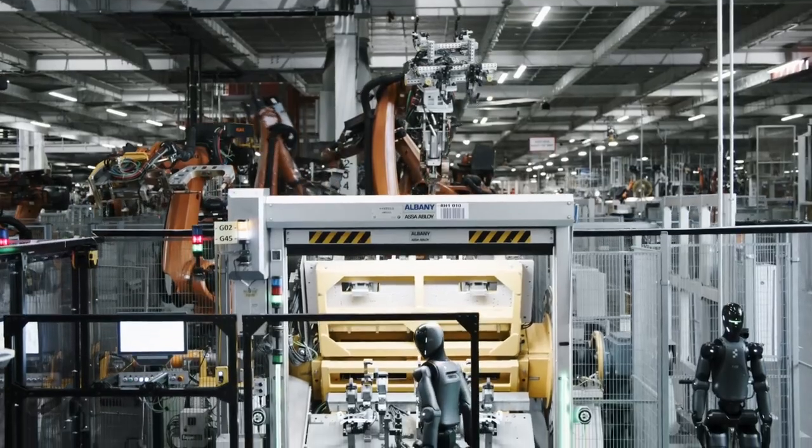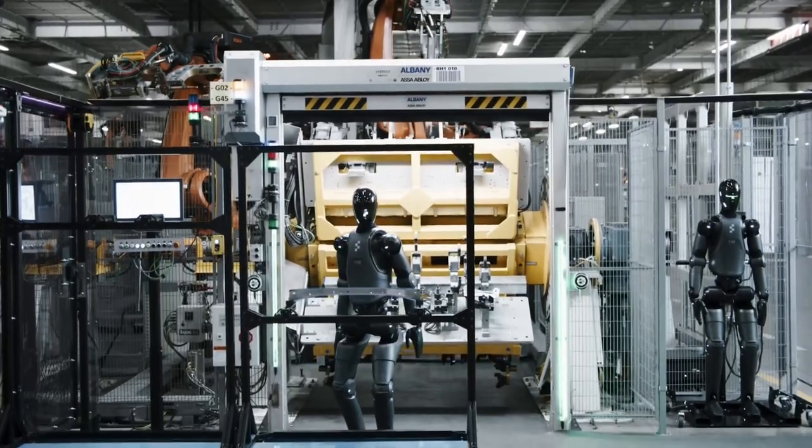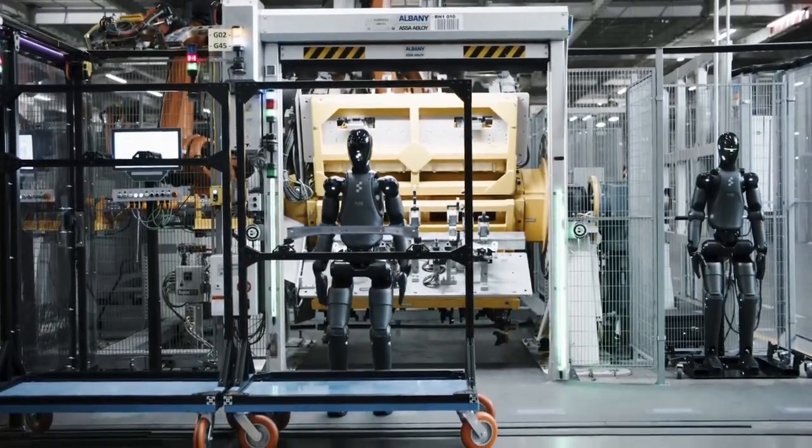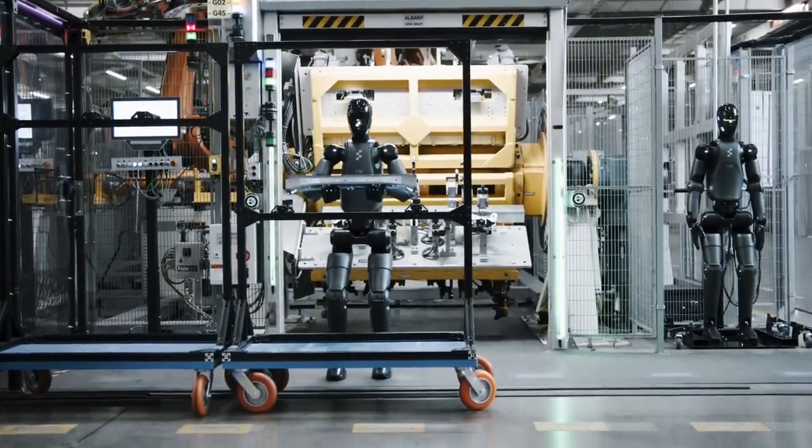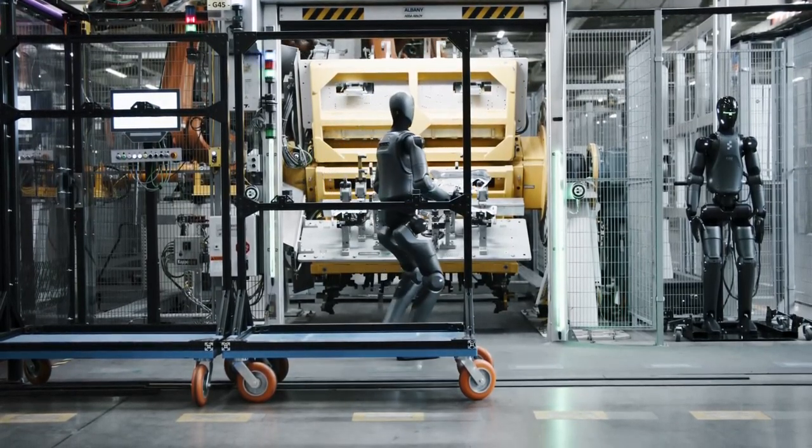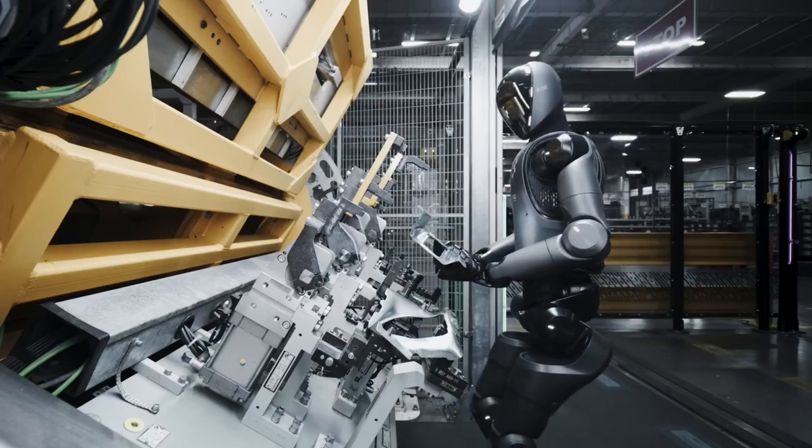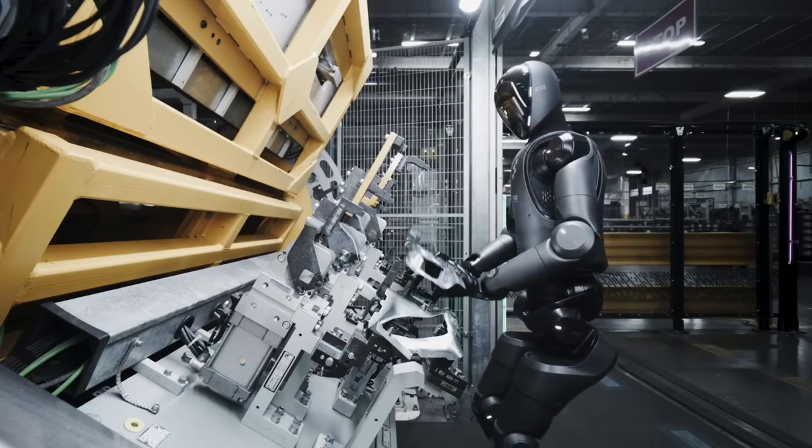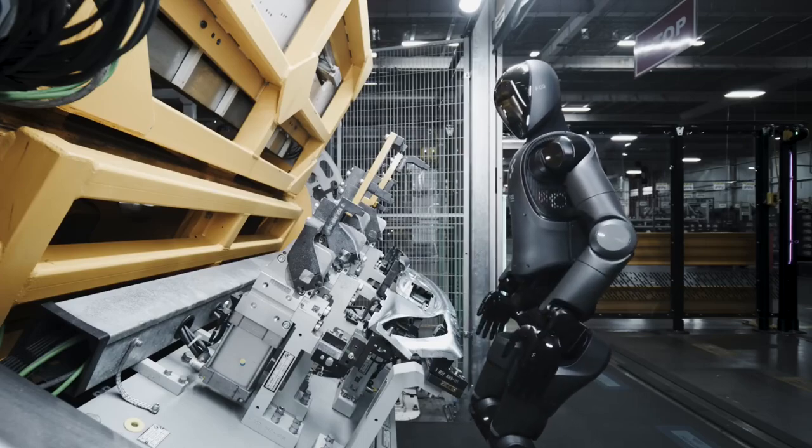What's especially interesting about Figure Zero Two's movements is how natural they are. It doesn't fumble. It doesn't jerk around like older bots. It adjusts its grip based on what it's holding. It moves with balance and fluidity. Even when dealing with squishy or unstable packages, it responds correctly. These details matter.